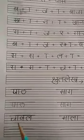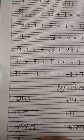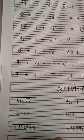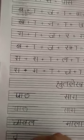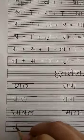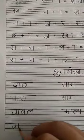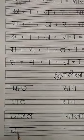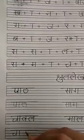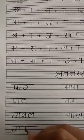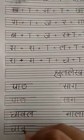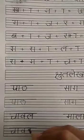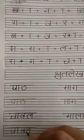Next — cha-vel. Cha-vel. Write cha. Like this — sleeping line, go, turn, semi-circle, touch with this point, and up. Cha. What is this? Cha. Speak cha. V. Write V. Like this — half circle up, half circle down, touch with this point. Cha-vel. Turn, go, turn — like this. Cha-vel.